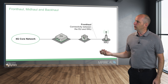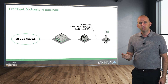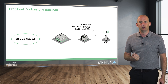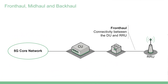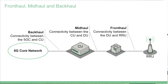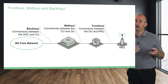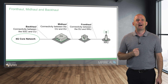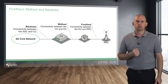When we link up the remote radio unit to the distributed unit, we call that a fronthaul transport network. Between the distributed unit and the centralised unit, we call that a midhaul transport network. And then finally, if we've got connectivity between the centralised unit and the core network, we would class that as the backhaul transport network.